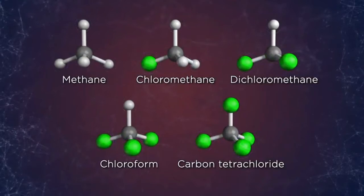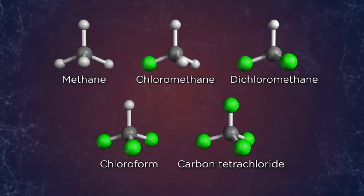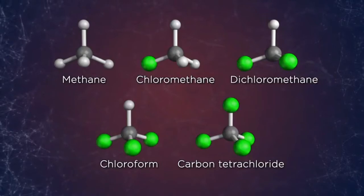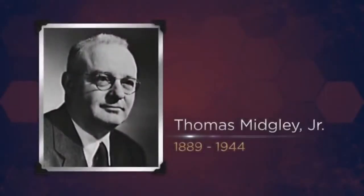They're more electronegative too. And this means that when we start replacing hydrogen atoms with halogen atoms, we begin introducing larger electron clouds and some new polar bonds that weren't there before. This can have a profound impact on the physical properties of an organic compound. And no story demonstrates it better than that of Thomas Midgley Jr.